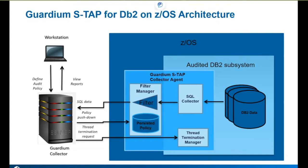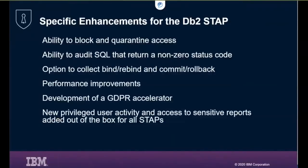On the far left-hand side, we have a workstation — the user interface to the Guardium collector. This is where our policies are built, how we interact with Guardium, and where reports are displayed. At the very bottom, we have a thread termination manager. This is where we could have a rule in place that says if this event happens and it's important enough, we want to block it from happening — for example, a database administrator accessing a production payroll table during the day. With Guardium, we can set a rule that would prevent that from happening.